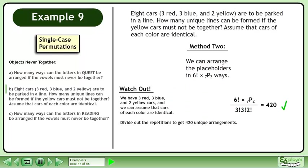We can arrange the placeholders in 6 factorial times 7P2 ways. Watch out — we have three red, three blue, and two yellow cars, and we can assume cars of each color are identical. Divide out the repetitions to get 420 unique arrangements. This is the same result we obtained earlier.